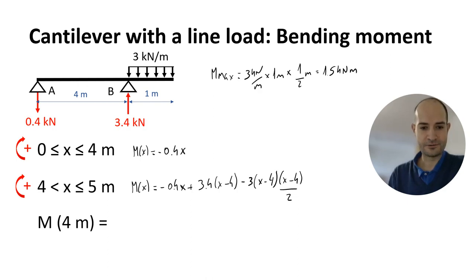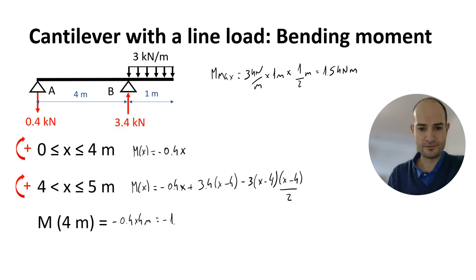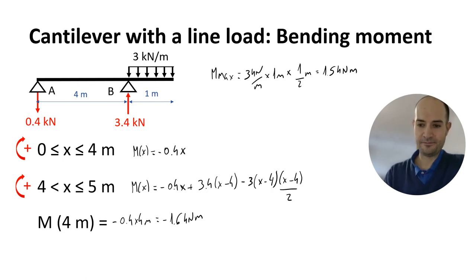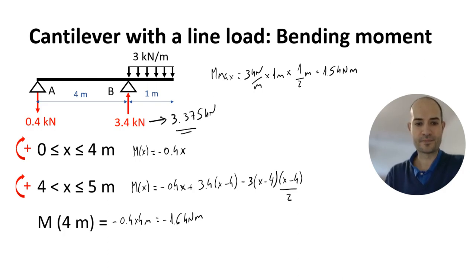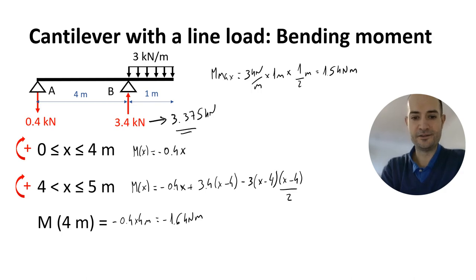If we calculate for x equals 4 meters we get minus 0.4 times 4 meters, which is minus 1.6 kN·m. As before, we don't get the same result because of the rounding of the reactions. If you want to get exact values you must know that the exact reaction is 3.375 kN. If you apply this value and calculate the uplift reaction, your equations will give exactly the same bending moment using the equation on top or using the moment diagram.